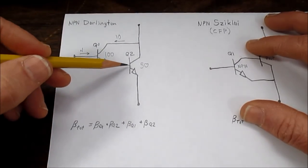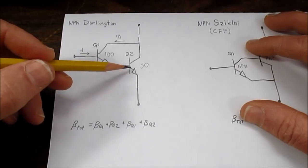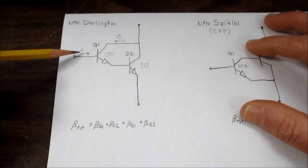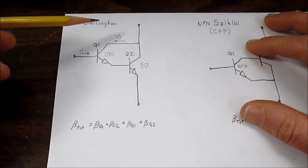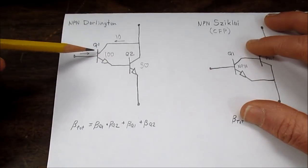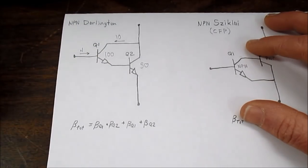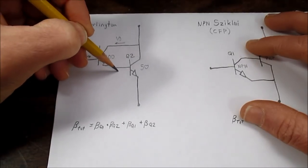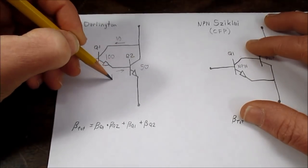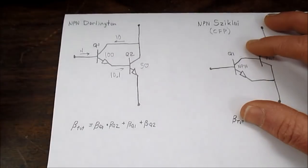But what current is going into this transistor? Well, this current goes somewhere. So what happens is these two currents converge in the emitter. So we actually have in this part of the circuit 10.1 milliamps flowing.